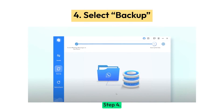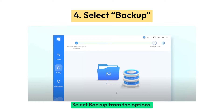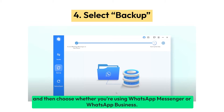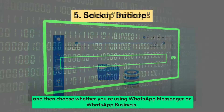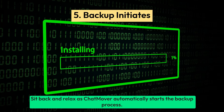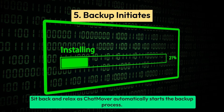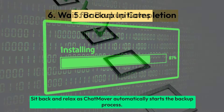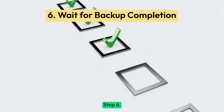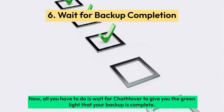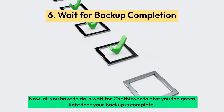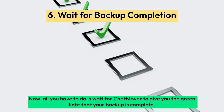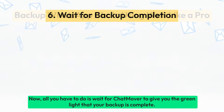Step 4: Select Backup from the options, then choose whether you're using WhatsApp Messenger or WhatsApp Business. Step 5: Sit back and relax as ChatMover automatically starts the backup process. Step 6: Wait for ChatMover to give you the green light that your backup is complete.